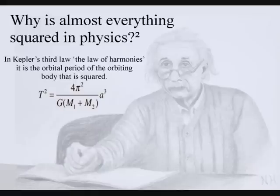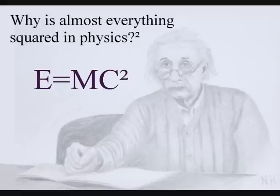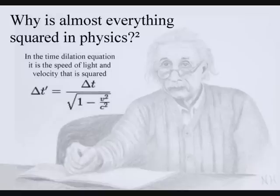The most famous of these equations is Einstein's energy equals mass times the speed of light squared, and this is typical of physics equations that are squared. It is normally the speed of light and velocity that are squared.